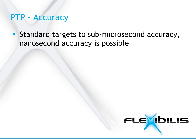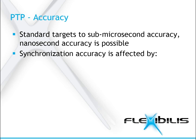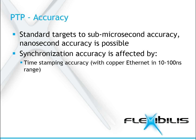The synchronization accuracy is affected by several error sources. One is the accuracy of the timestamping at hardware, which is typically in the range of 10 to 100 nanoseconds with copper Ethernet. With copper Ethernet, the inaccuracy is dominated by physical layer chip first-in first-out operation, whose length is undefined. Also the stability of the onboard oscillator and the adjustment algorithm affects the accuracy.